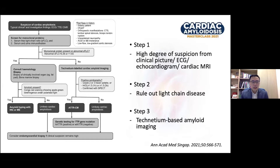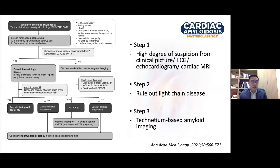Many societies have published guidelines and flow charts for the diagnosis of ATTR cardiac amyloidosis, and this was also published in our local journal, the Annals of the Academy of Medicine, by our group. Basically, it breaks into three simple steps. The first step is to suspect. If you do not suspect the patient of having transthyretin amyloid cardiomyopathy, they will never be put through this algorithm. Suspicion is based on clinical history, echo findings, cardiac MRI findings, and electrocardiography.